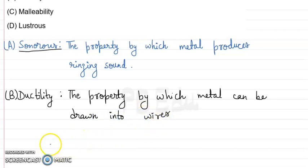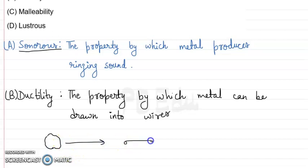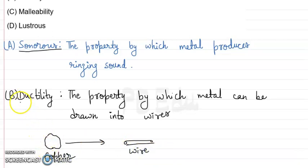If we obtain metal from the ore, we have metal in rock form, and if we can draw it into a wire — for example, we use copper wires for electricity conduction. So if we take copper metal and convert it into wire, the property it has is ductility. The property of metals by which they can be drawn into wires is called ductility.